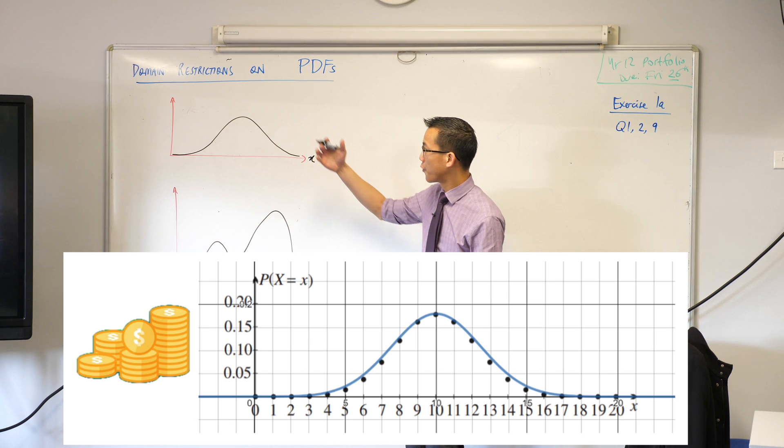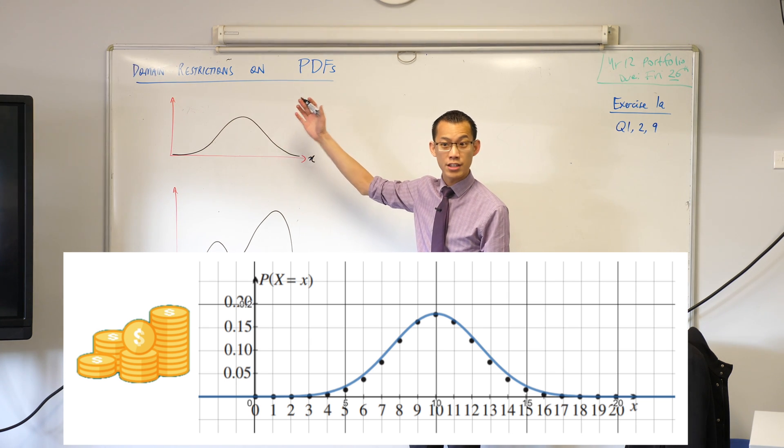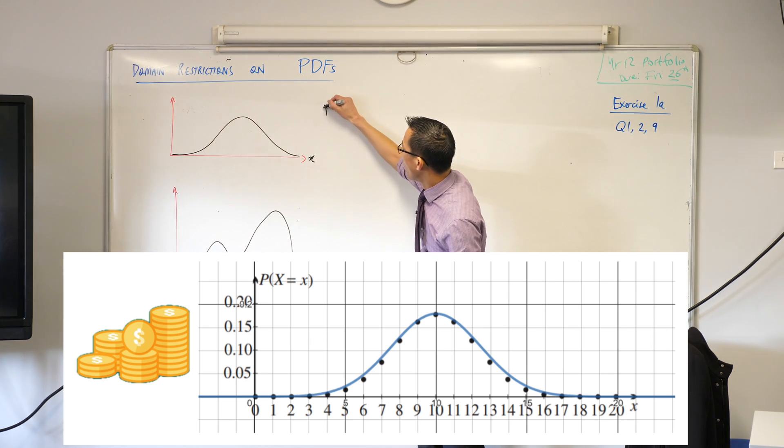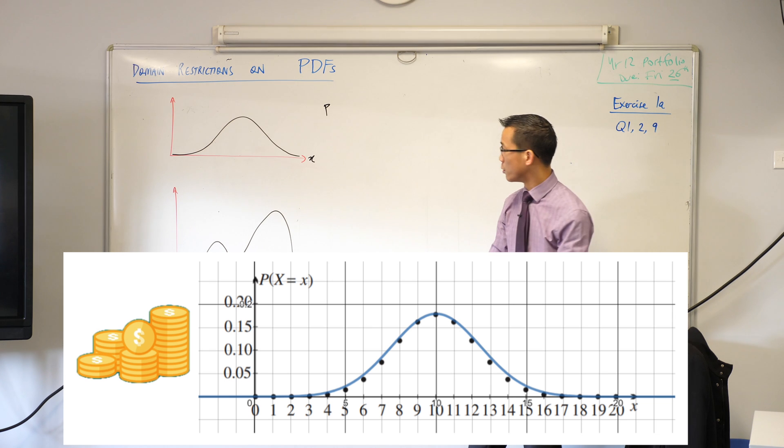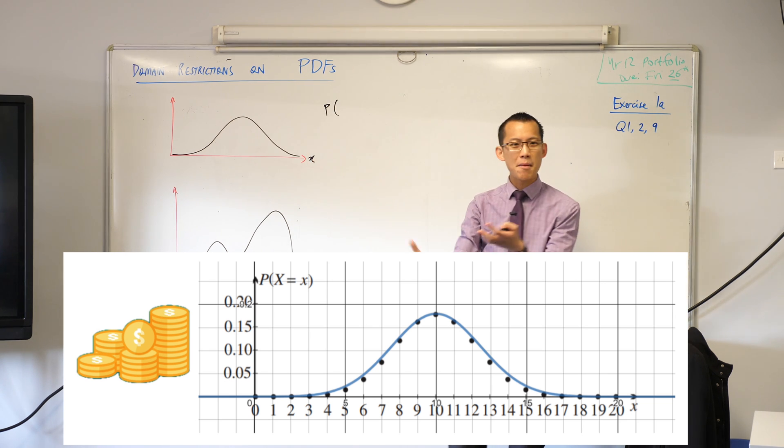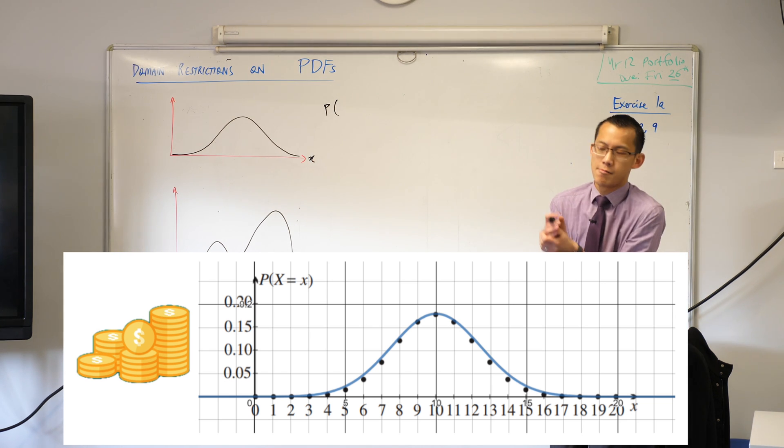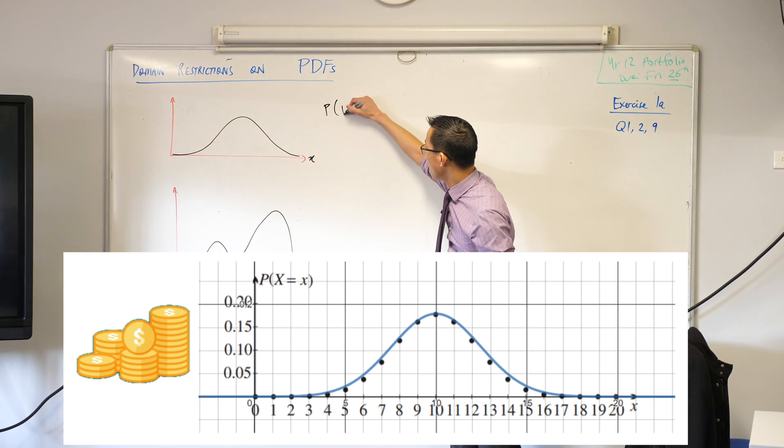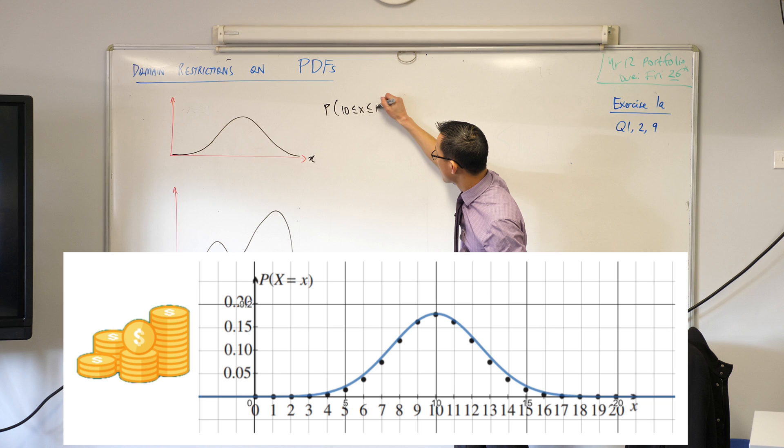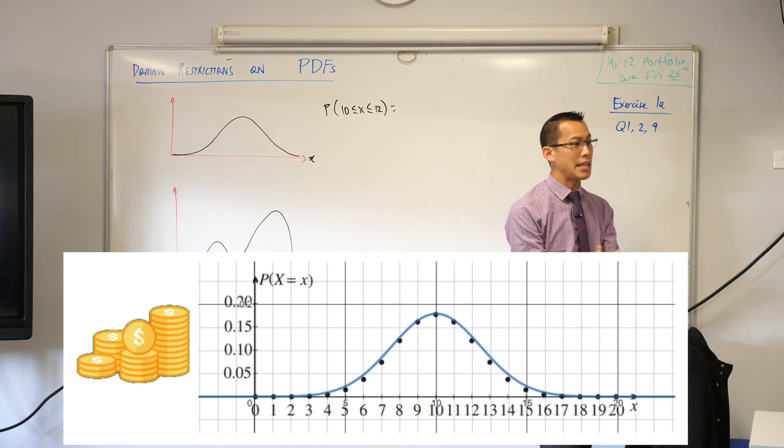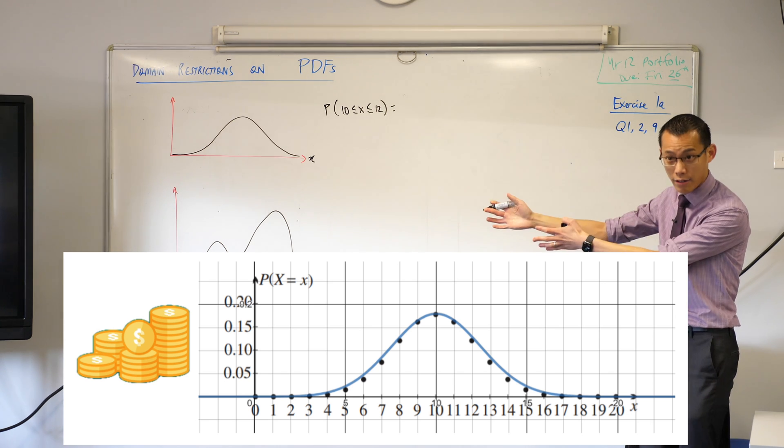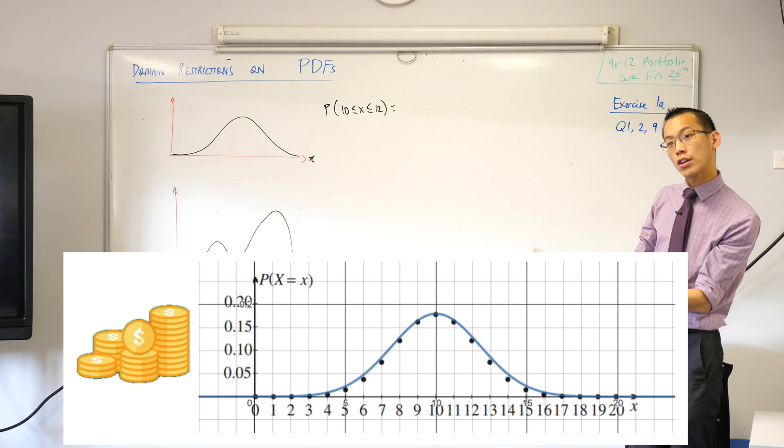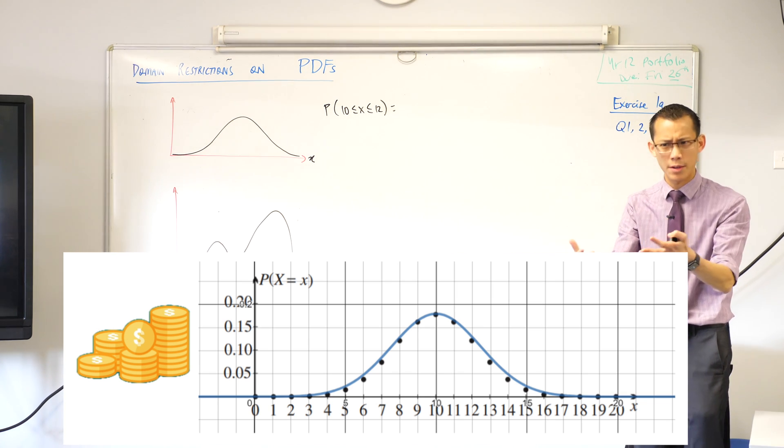If I asked you, off of this probability density function, what's the probability, for example, of the number of heads face up being, I don't know, between 10 and 12? The probability of it being between 10 and 12. We've established, okay, well you can integrate to find the area under this function, and that'll give you the probability. Does this ring a bell?